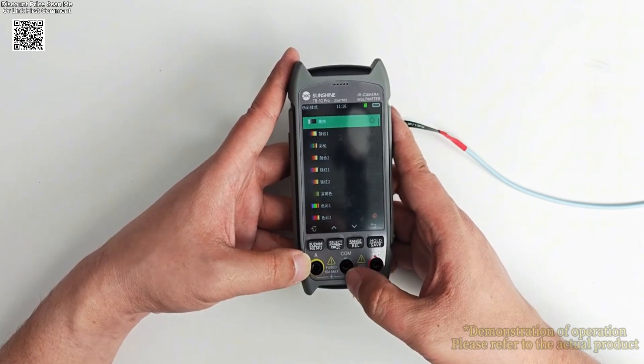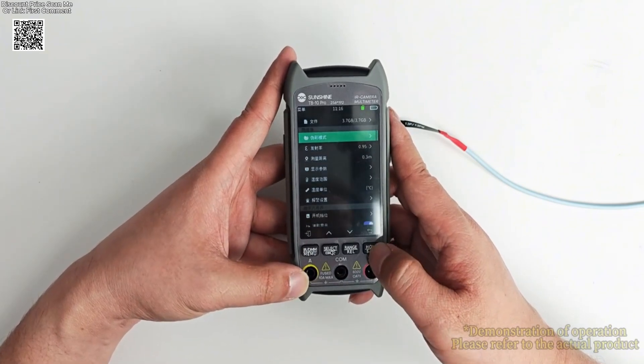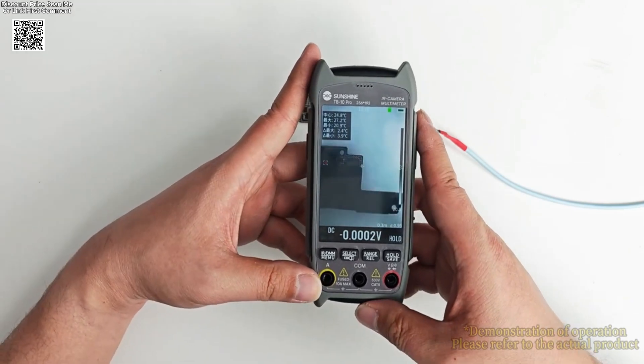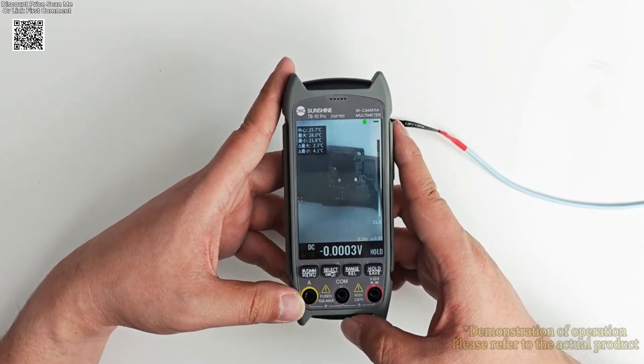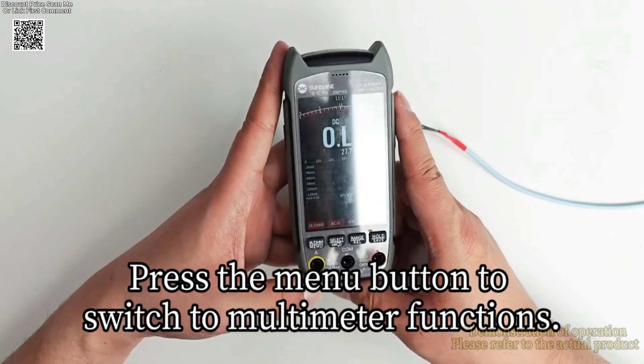The TB10 Pro also features a smart macro mode, which allows users to slide the macro lens left and right for flexible magnification. This enables the inspection of minute details, as small as 1mm x 1mm, perfect for intricate electronics work.